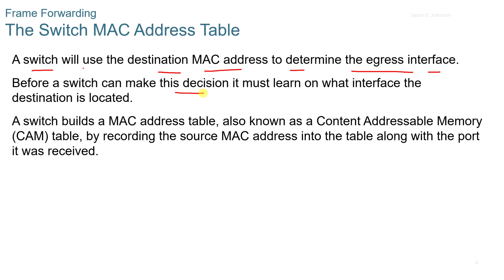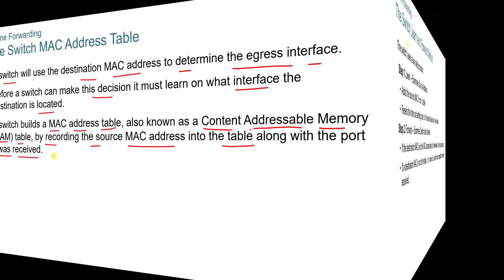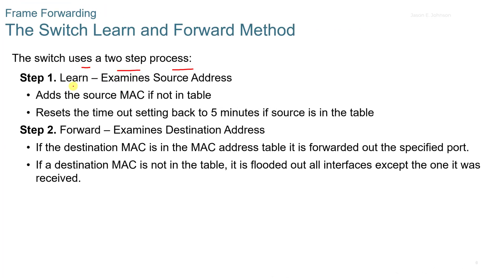Before a switch can make a forwarding decision, it must learn on which interface the destination is located. A switch builds a MAC address table, also known as the Content Addressable Memory table or CAM, by recording the source MAC address along with the port it was received on. The two-step process begins with Step 1: Learn — the switch examines the source address, adds the source MAC if not in the table, and resets the timeout to five minutes if it is.